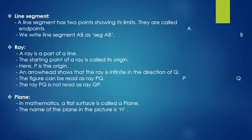Third, Line Segment. A line segment has two points showing its limits. They are called endpoints. We write line segment AB as seg AB.